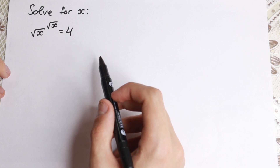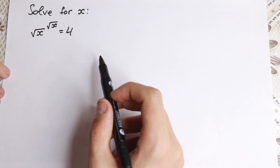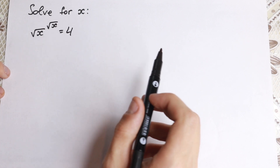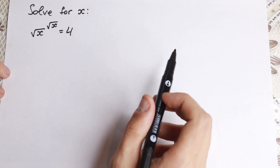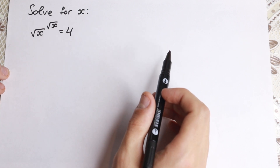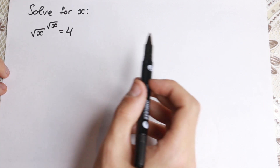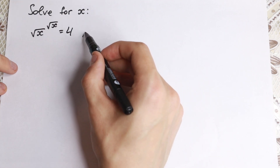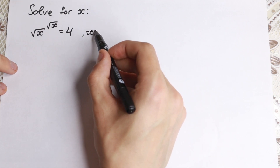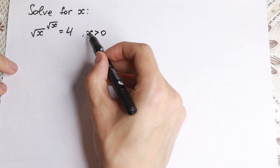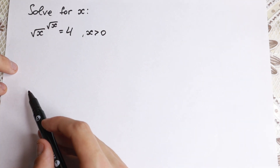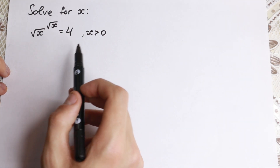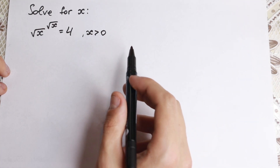How can we solve it? The first way is to use logarithm, but I don't want to do that because I want to show you a really good trick. First of all, we need to mention that x is positive, because we have a square root in our base and as the power, so x is positive.